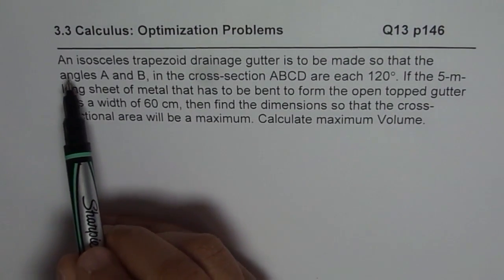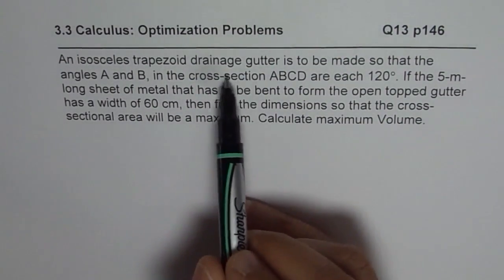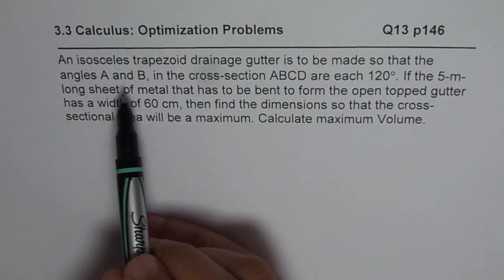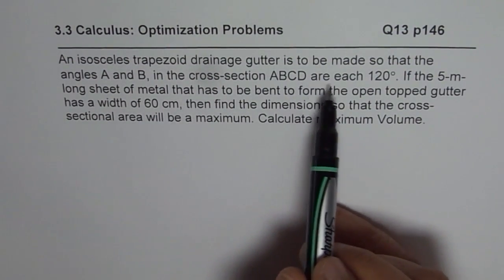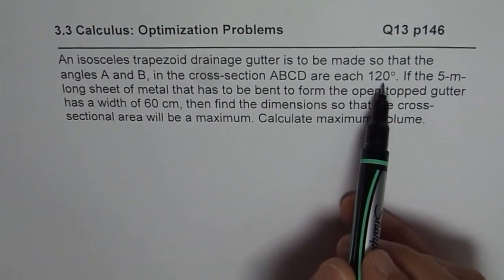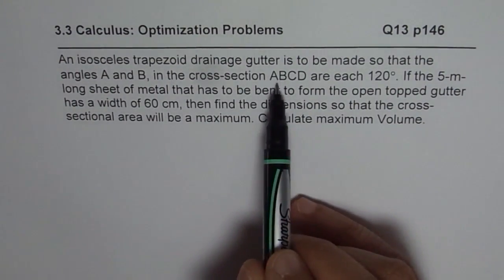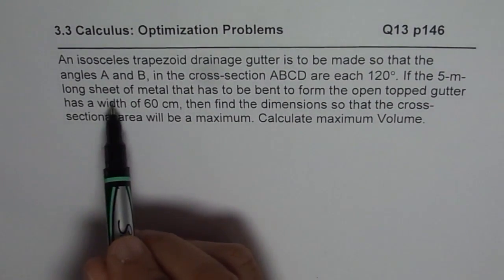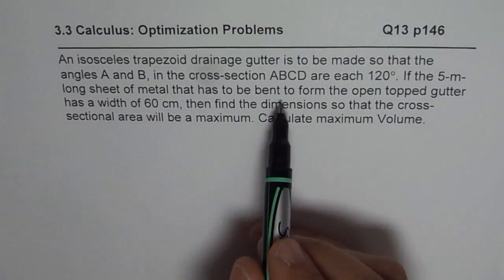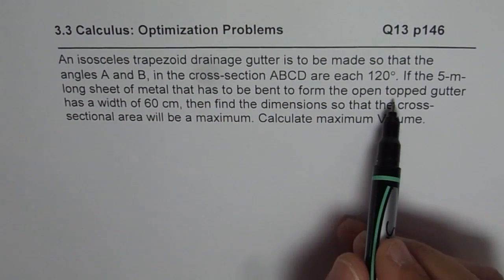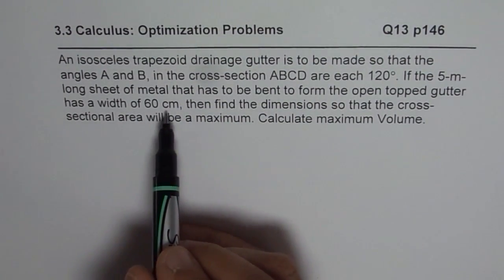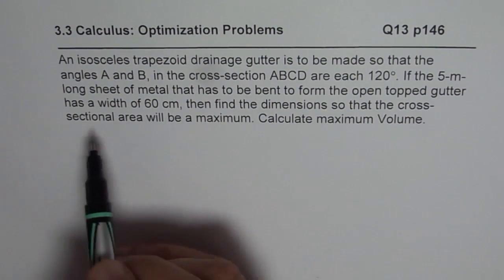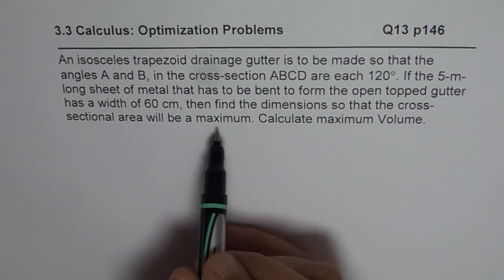The question here is: an isosceles trapezoid drainage gutter is to be made so that the angles A, B, C, D in the cross section are each 120 degrees. I need to sketch the diagram to make this clear. If the 5 meter long sheet of metal that has to be bent to form an open top gutter has a width of 60 centimeters, then find the dimensions so that the cross sectional area will be a maximum.